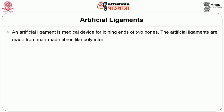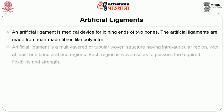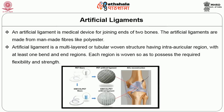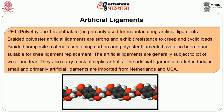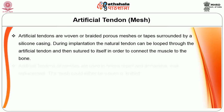An artificial ligament is a medical device for joining two ends of bones. Artificial ligaments are made from non-woven material and man-made fibers like polyester. An artificial ligament is a multi-layer or tubular woven structure having an intra-articular region with at least one bend and one end region, each region woven separately to possess the required flexibility and strength. PET is primarily used for manufacturing artificial ligaments. Braided polyester artificial ligaments are strong and exhibit resistance to creep and circular loading. Braided composite materials containing carbon and polyester filaments have also been found suitable for leg ligament replacement. The artificial ligament market in India is small and primarily imported from Netherlands and USA.